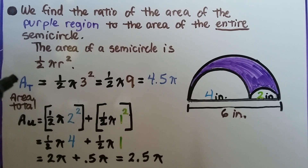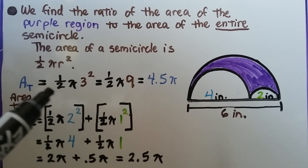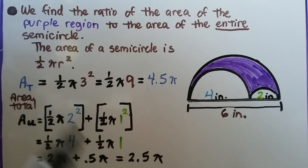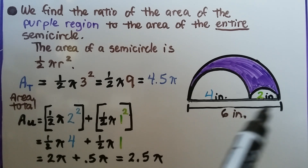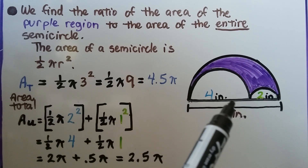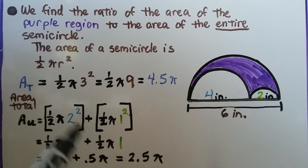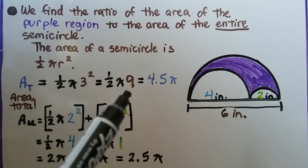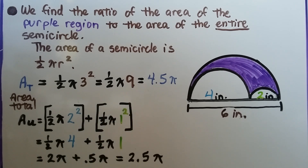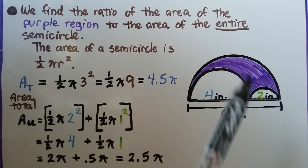The area of a semicircle formula is half pi r squared, because a full circle is pi r squared. The total area, A_t, is equal to half pi times 3 squared. If the diameter is 6 inches, the radius is 3 inches. That's half pi times 9, which equals 4.5 pi — the area of the total semicircle.